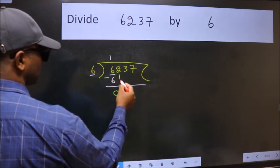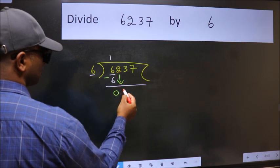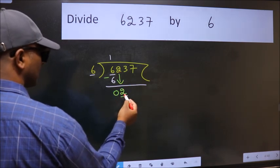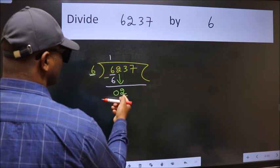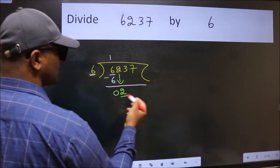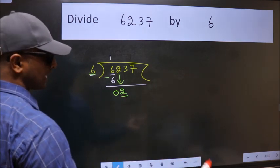After this, bring down the beside number. So 2 down. Now here we have 2 and here 6. 2 is smaller than 6, so we should bring down the second number.